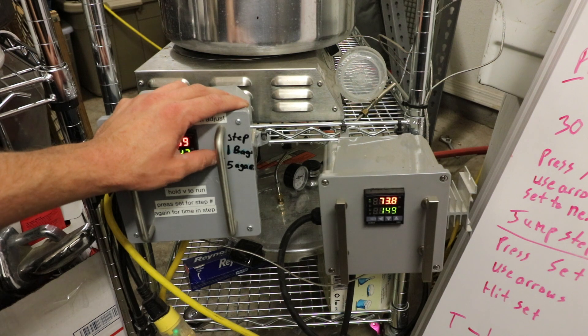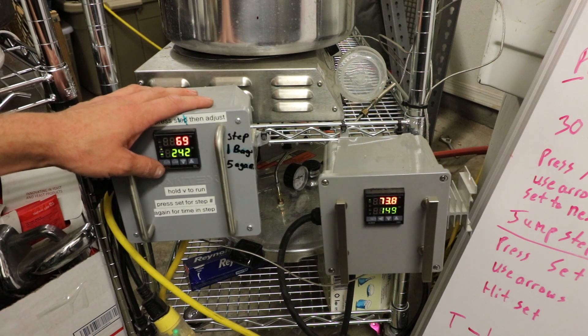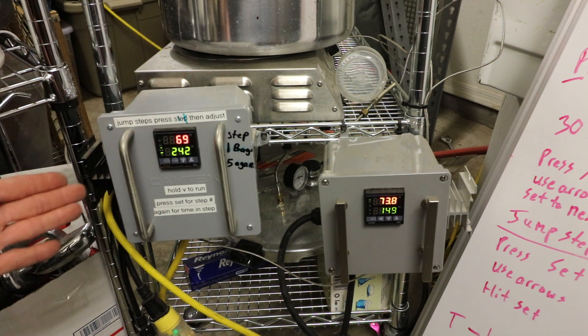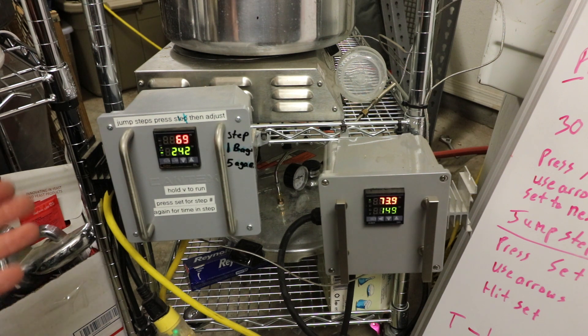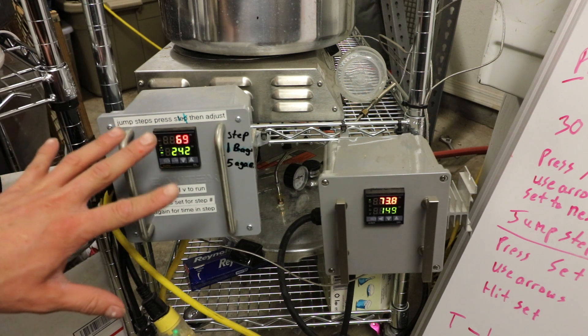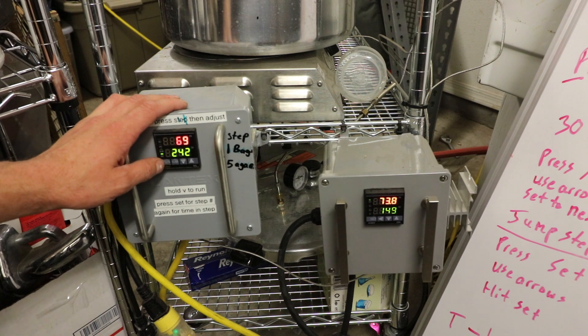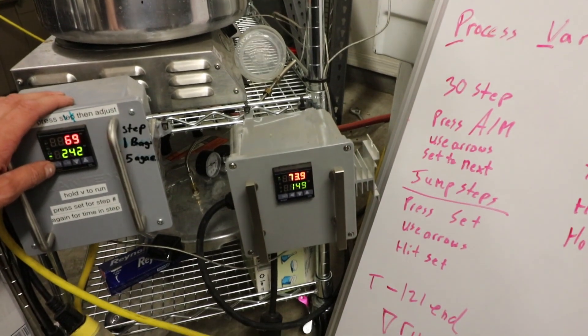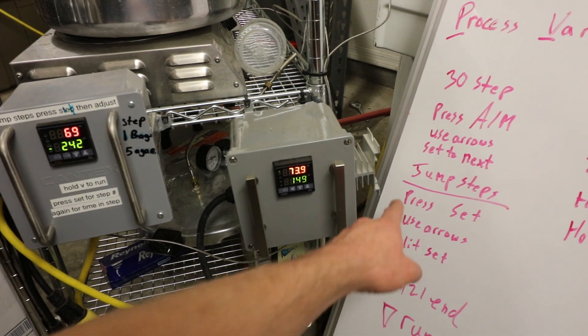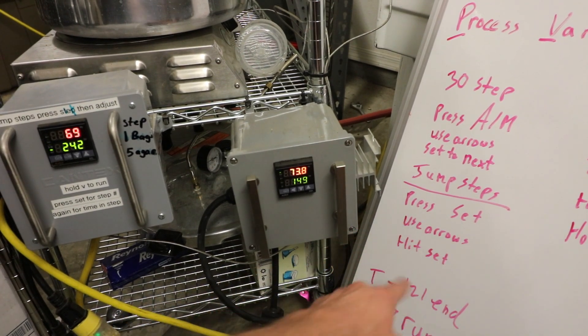So steps one through four is for bags. If I wanted to jump to step one and just do bags, and I'm not doing agar, I don't need to reprogram the whole thing. All I do is I just press set, and then you use the arrows and hit set.